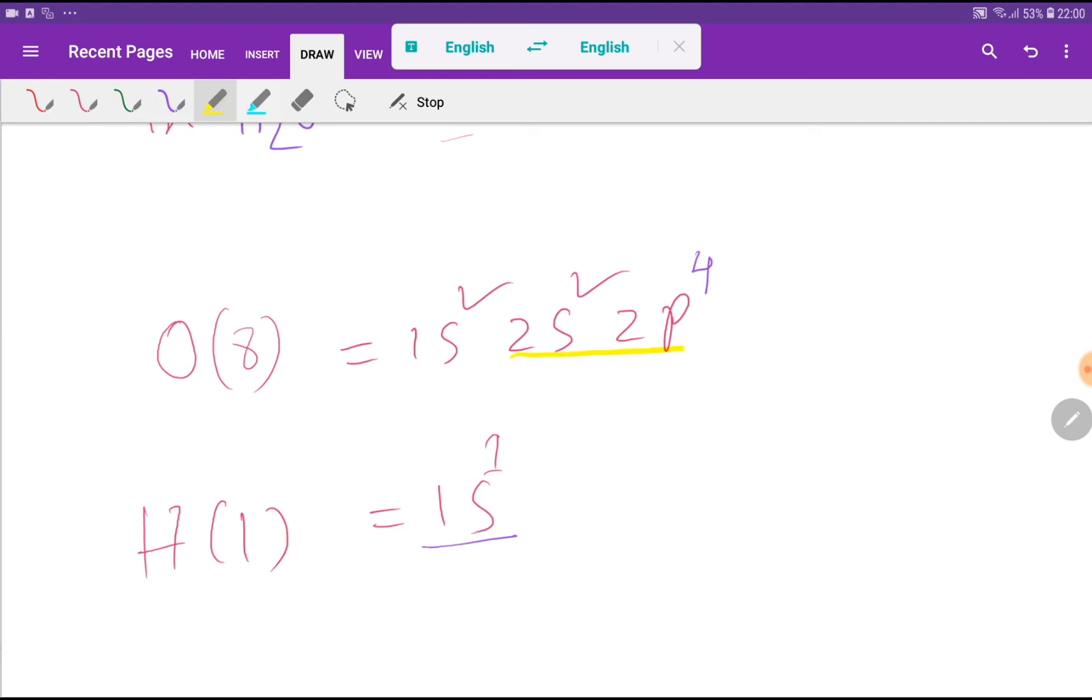For oxygen, the highest value for the outermost shell is the second shell. The outermost shell is called the valence shell, and the electrons in the valence shell are called valence electrons. For oxygen we have two plus four, that is six valence electrons.